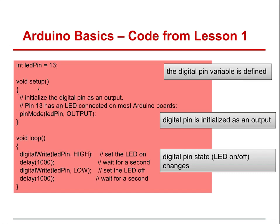In void setup, most of the time you'll see a function called pin mode. Pin mode tells us if the pin is going to be an output or an input. LEDs are outputs, a motor is an output. A touch sensor is an input. So this says: pin mode, capital M on Mode, parentheses, LED pin, comma, output, parentheses, semicolon — that makes LED pin an output.